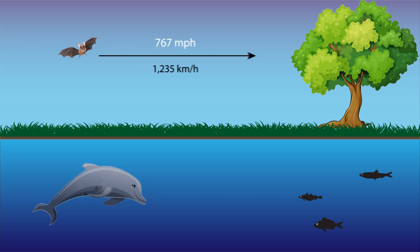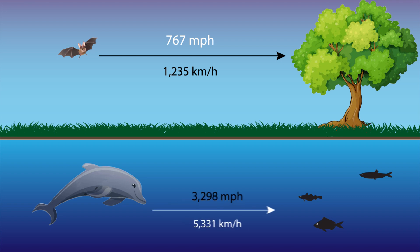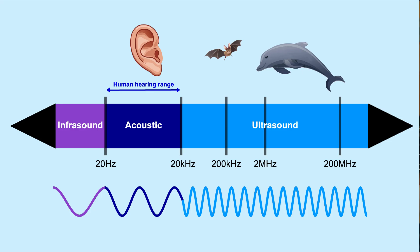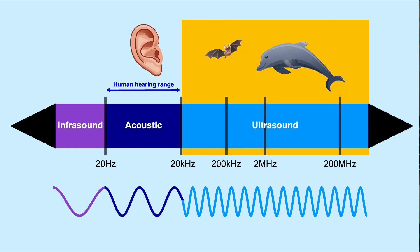The speed of sound is about 767 miles per hour at sea level, but sound can travel 4.3 times faster in water than in air. Ultrasonic sensors use a vibrating membrane to both generate and detect the sound used to determine distance. Humans can typically hear sounds within the acoustic frequency range of 20 Hz up to 20 kHz. Above 20 kHz is the ultrasonic range.